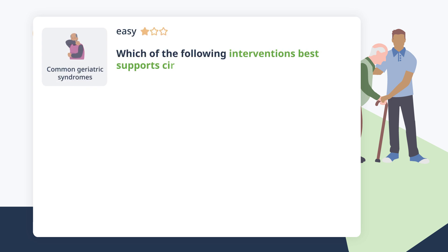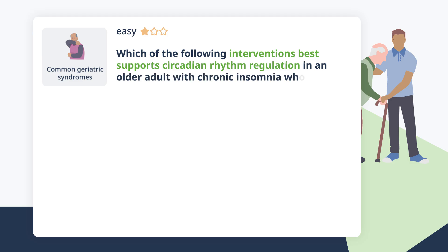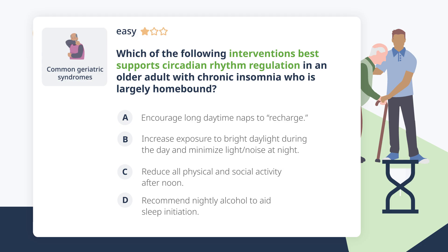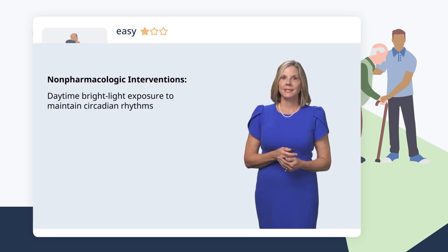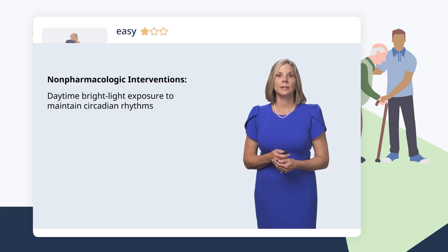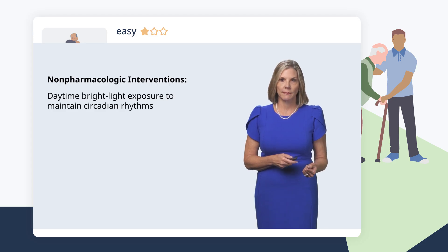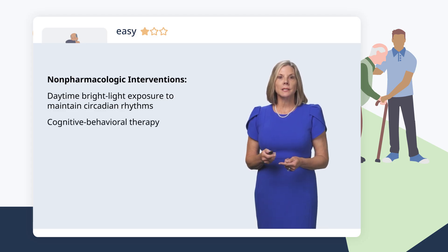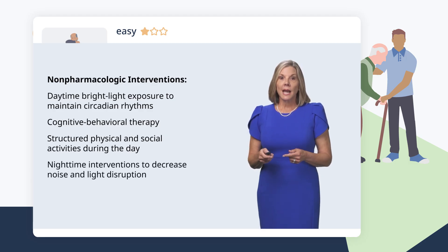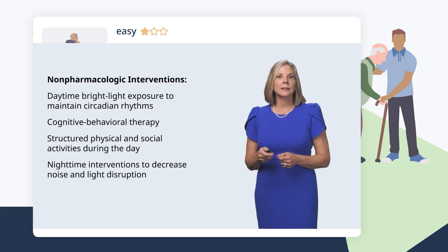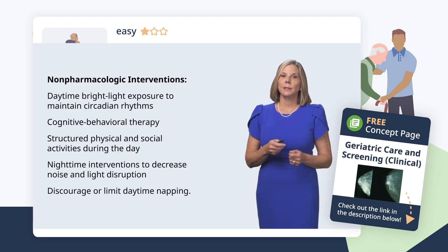Which of the following interventions best support circadian rhythm regulation in an older adult with chronic insomnia who is largely homebound? Key interventions include ensuring adequate daytime bright light exposure to maintain circadian rhythms — especially for homebound or residential patients — cognitive behavioral therapy, structured physical and social activities during the day, nighttime noise and light reduction, and limiting daytime napping.